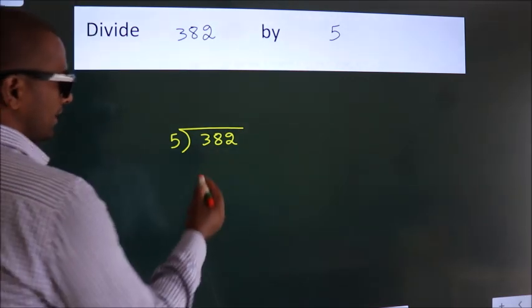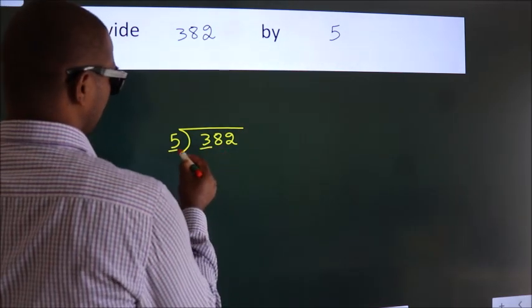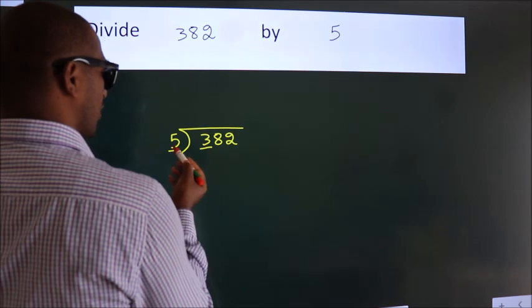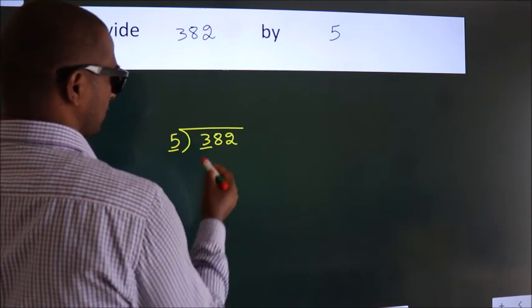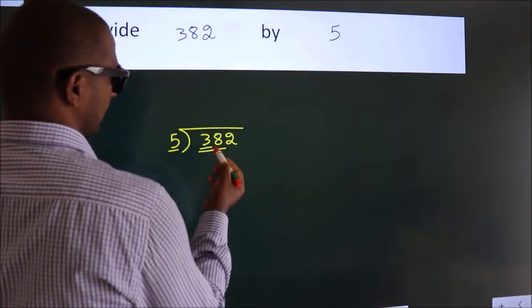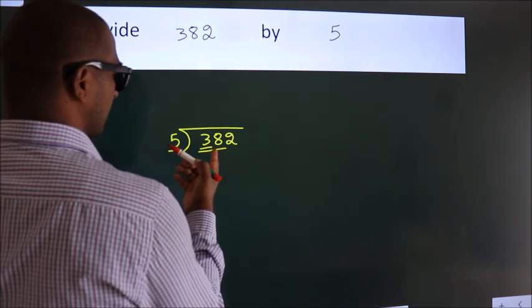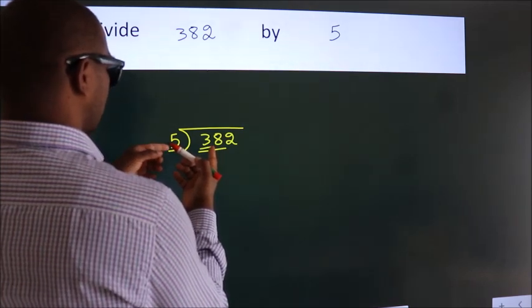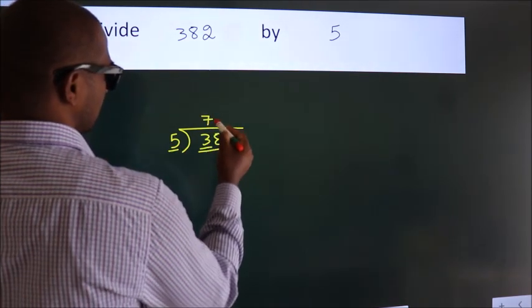Next, here we have 3, here 5. 3 is smaller than 5, so we should take 2 numbers: 38. A number close to 38 in the 5 table is 5 times 7 equals 35.